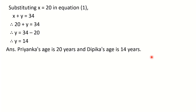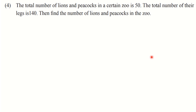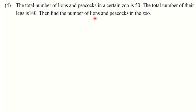Let us go towards Question 4. The total number of lions and peacocks in a certain zoo is 50, and the total number of their legs is 140. Find the number of lions and peacocks in the zoo. The first condition is the total number of lions and peacocks is 50, and the second condition is the total number of legs is 140.